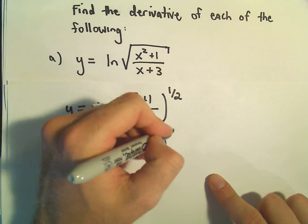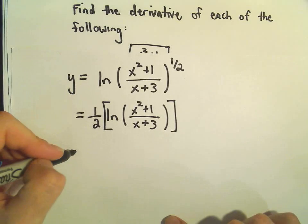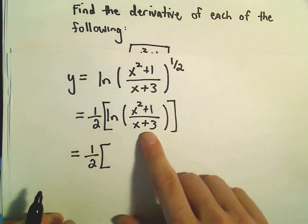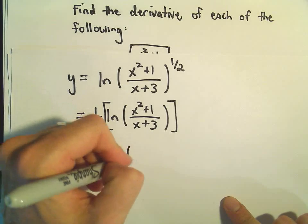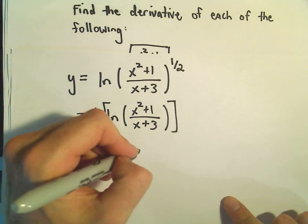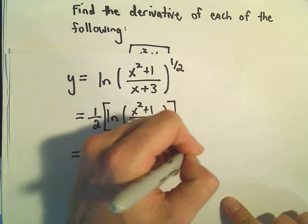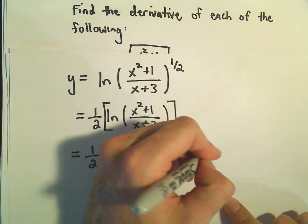I'm going to kind of think about that as being in brackets, and you'll see why in just a second. So recall for logarithms, if we have division, we can rewrite that as subtraction. So I can rewrite this as the natural logarithm of x squared plus 1 minus the natural logarithm of x plus 3.